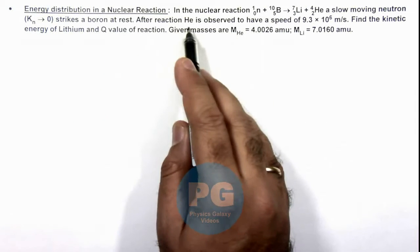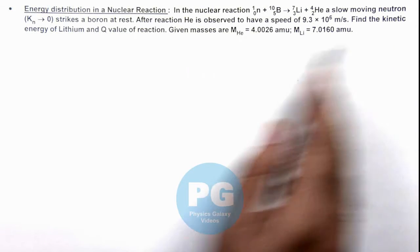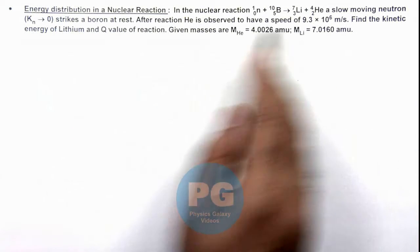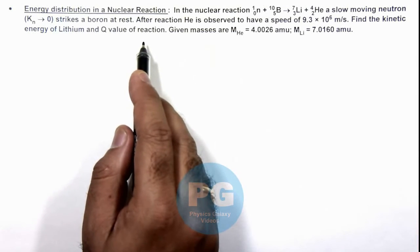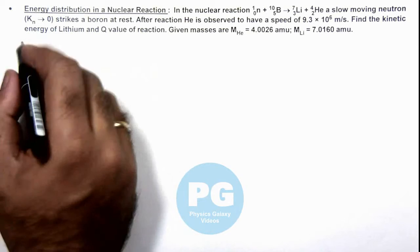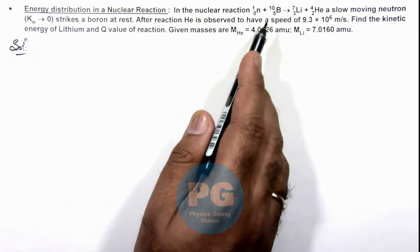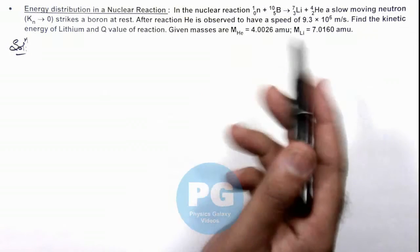After reaction, helium is observed to have a speed of 9.3 × 10⁶ m/s. We are required to find the kinetic energy of lithium and Q value of the reaction, and we are also given the masses of helium and lithium. Now in this situation, as initially boron was at rest and kinetic energy of neutron was also negligible...